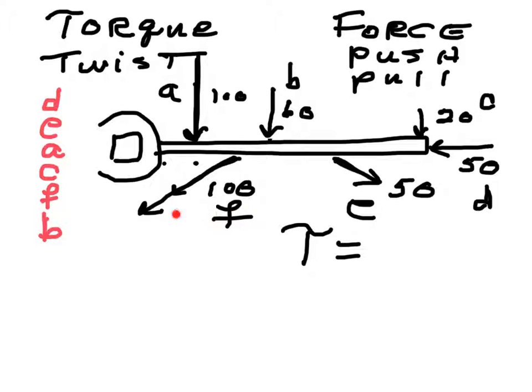The parallel component doesn't do any torque. It's along the axis, like this force D doesn't cause any torque. So it's the magnitude of the force, the distance of the force from the axis, and the angle at which it operates.